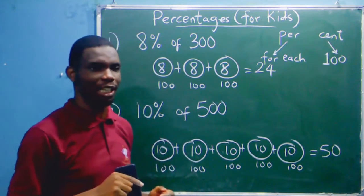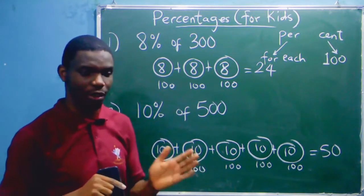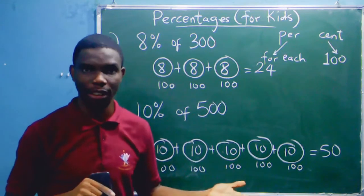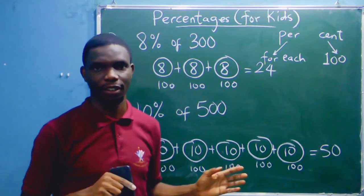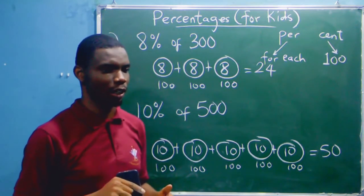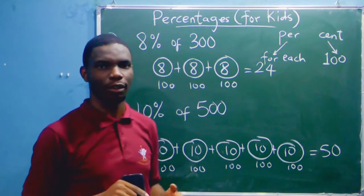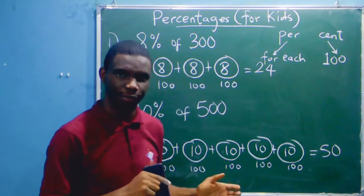percentage. We are saying, for instance, if we say 5%, we are saying for each hundred of whatever you're considering. If it is money, for each hundred naira you take 5. If it is pencils, what is 5% of 100 pencils? For each hundred you take 5. That's the meaning